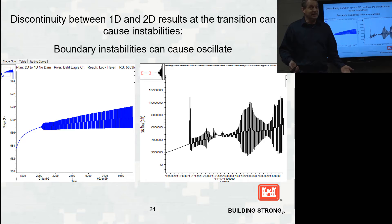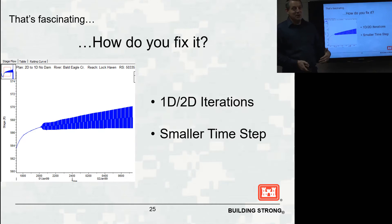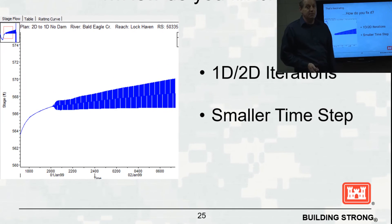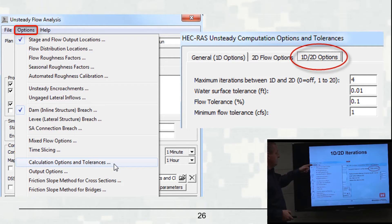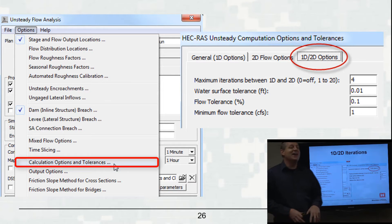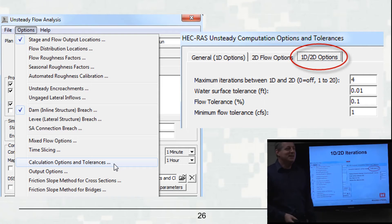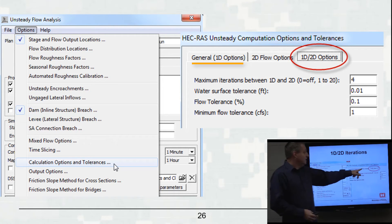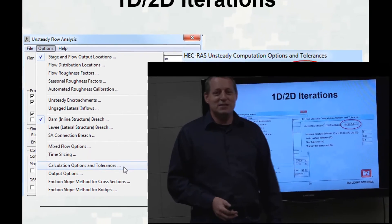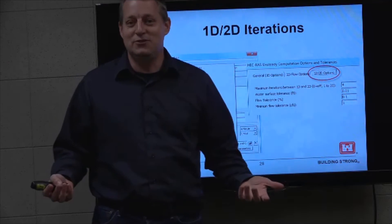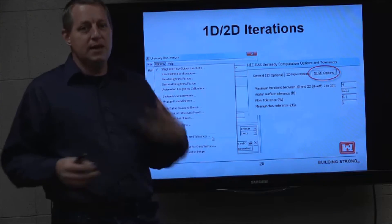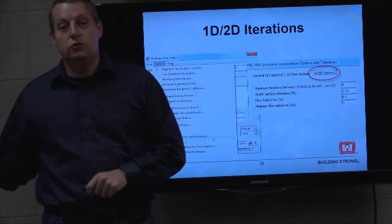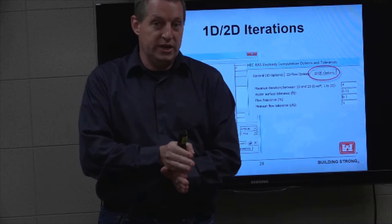There are two ways to fix this. One is to turn on 1D/2D iterations, and the second is to lower your time step. For iterations: in the Options menu under Unsteady Flow, go to Calculation Options and Tolerances. There you'll find a '1D/2D Options' tab — all those options are about how you transition flow between the 2D and 1D model at a shared boundary. We're going to monitor the shared boundary, tracking the stage difference and flow difference between the two models.